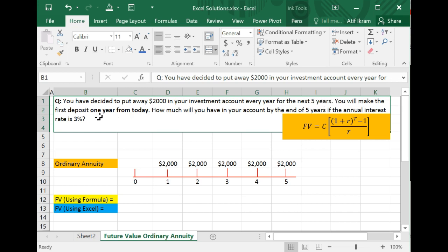You will make the first deposit one year from today. This is the part that makes it an ordinary annuity because the first deposit is going to happen one year from today. The question is how much will you have in your account by the end of five years if the annual interest rate is 3%?